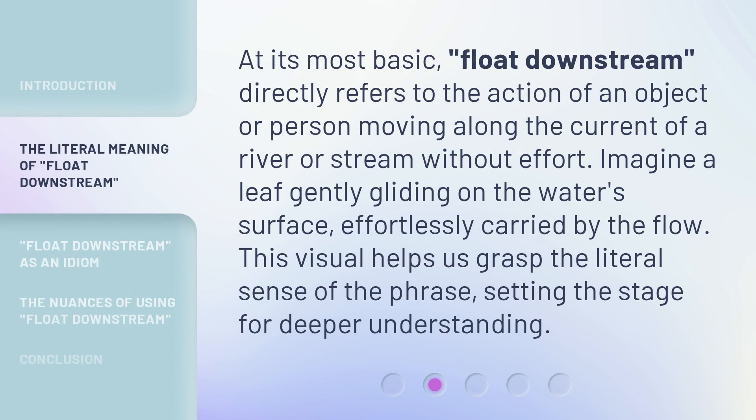At its most basic, float downstream directly refers to the action of an object or person moving along the current of a river or stream without effort. Imagine a leaf gently gliding on the water's surface, effortlessly carried by the flow. This visual helps us grasp the literal sense of the phrase, setting the stage for deeper understanding.